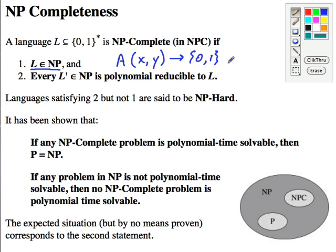So if you can solve the NP complete problem in polynomial time and then you have a polynomial reduction, you can solve every other problem L' in NP in polynomial time.